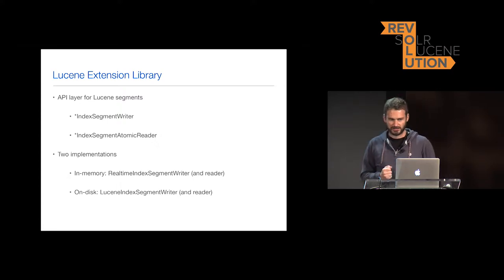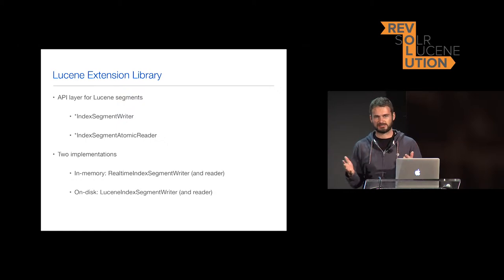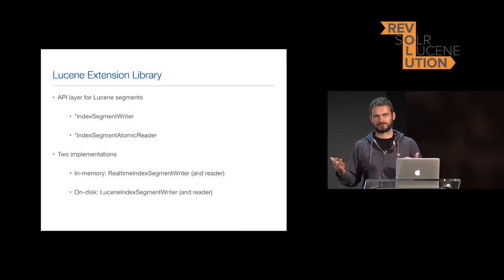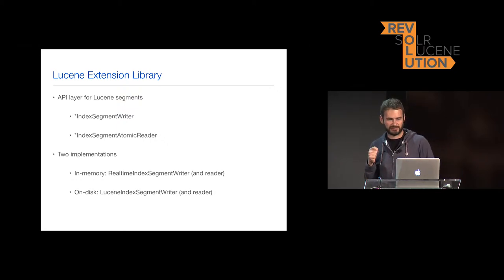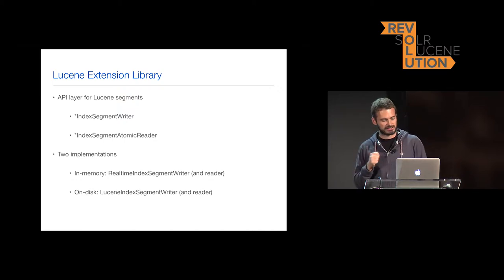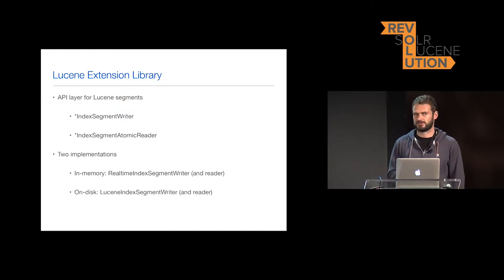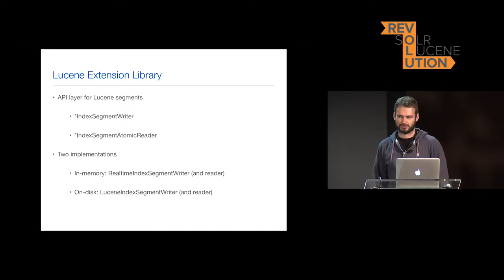The API layer for Lucene segments helps us abstract away from the fact that a Lucene segment can be built in memory for real-time search or stored on disk. We introduced a higher-level writer and reader API that deals only with segments. A segment in Lucene is basically one inverted index — one file for postings, one dictionary. For each writer and reader interface we have two implementations: one for in-memory (Early Bird) and one for on-disk using vanilla Lucene 4.4, currently being upgraded to 4.10.2.